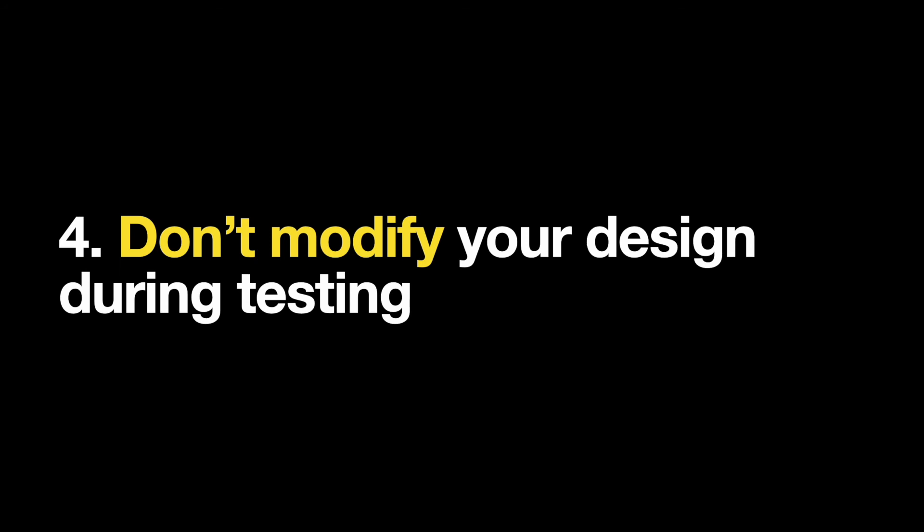Number four: do not modify the design during testing. Introducing changes in design during the active testing phase is one of the most critical yet widespread mistakes that product teams make. When you see that something in your design isn't working as expected, you might want to fix it right away. But making changes during the test will introduce bias in your results, and you won't be able to tell whether or not your change affected the data.